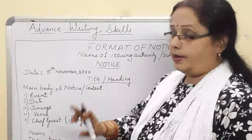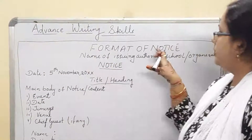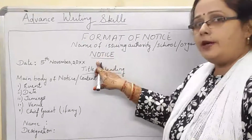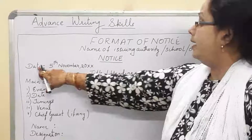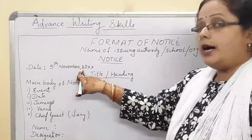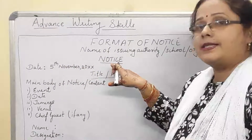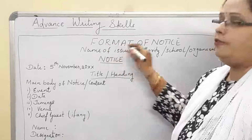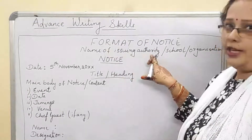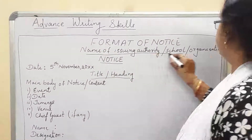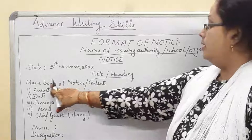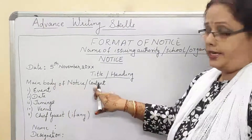Remember: make a box. The format of notice includes — name of the issuing authority, which is underlined; 'NOTICE' in block letters, underlined; date in the format '5th November, 20XX'; don't forget to underline the title or heading. The issuing authority and title must both be underlined, as I have already told you.